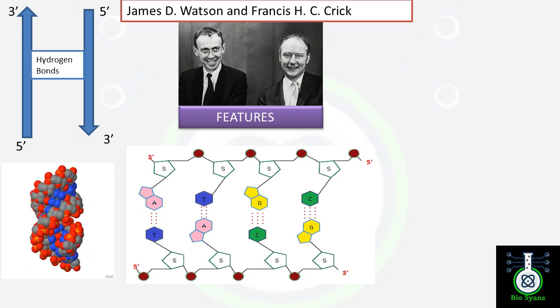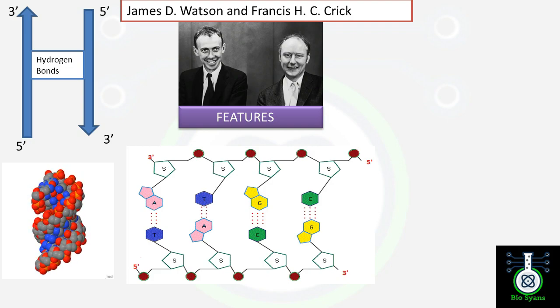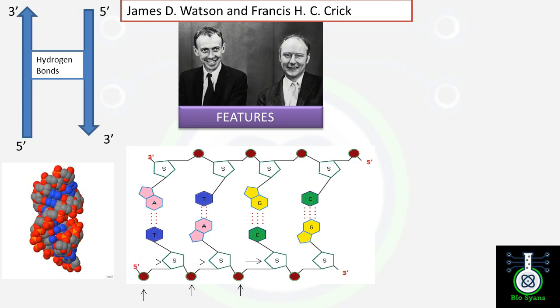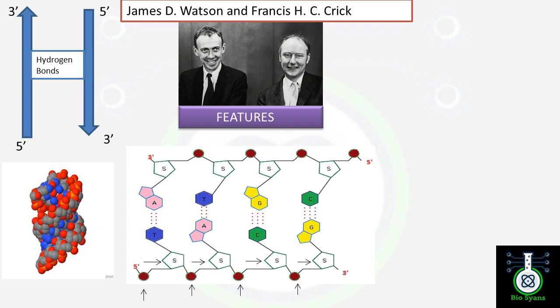The second point is that these two strands are helically coiled around a common axis in a clockwise manner. If you see, there's an alternate arrangement of phosphate, sugar, phosphate, sugar, and so on. This forms the backbone of the double helix structure.